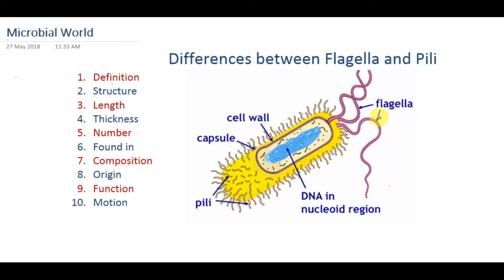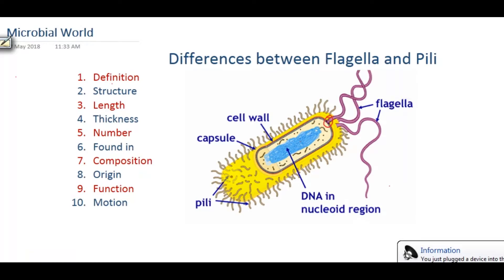If we consider flagella, it is a long tail-like structure that comes out from the cell membrane of the bacteria. Whereas if we consider pili, it is a short, hollow, non-helical structure that comes out from the cell surface of the bacteria.